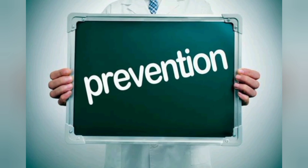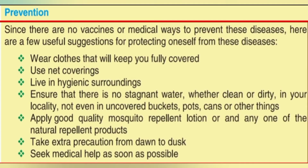Now I'm going to explain prevention. There are no vaccines or medical ways to prevent these diseases, so we must follow some precautionary measures. Try to wear clothes that keep you fully covered. Use net coverings and live in hygienic surroundings. Make sure there is no stagnant water, because mosquitoes breed in stagnant water. Ensure the surroundings are clean — there should be no uncovered buckets, pots, cans, food items, or other things.